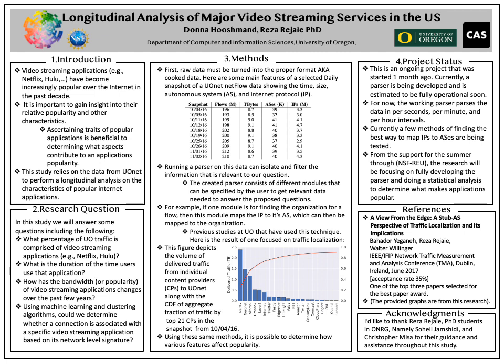We can ask a lot of questions about the characteristics of these flows. For example, what percentage of traffic is comprised of video streaming applications, or how has this percentage changed over time? Another interesting question is: can we use machine learning and clustering algorithms to determine whether a connection is associated with a specific video streaming application based on its network-level signature, or even whether it was a video at all?